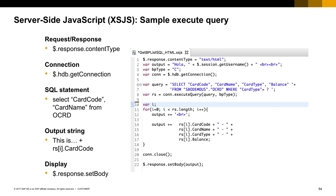In the next example we will implement an XSJS code that will be responsible for retrieving data from the SAP Business One database. To perform this operation we're going to use some specific XSJS interfaces: the $response content type to specify the type of response we'll provide to the client, the $hdb get connection to execute a SQL statement, and the $response set body to set the content of our response.